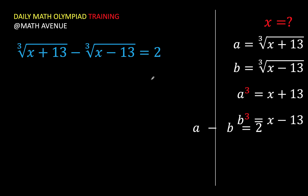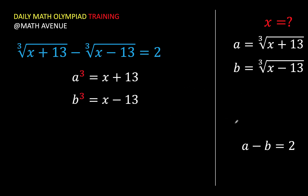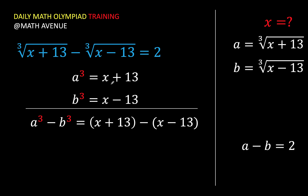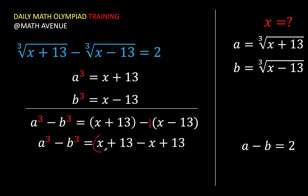Let's go back to these two equations and solve simultaneously by subtraction. Subtracting the second equation from the first: a cubed minus b cubed on the left, and x plus 13 minus the quantity (x minus 13) on the right. Removing the grouping symbols — the minus sign means negative 1 times each term — x and negative x cancel, leaving 13 plus 13, which is 26.